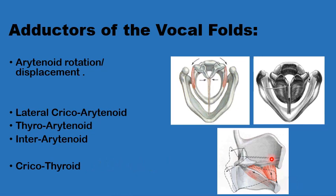When the cricothyroid contracts, it tilts the posterior plate of the cricoid cartilage and displaces the arytenoid cartilage posteriorly. This action brings about stretching of the vocal fold, lengthening of the vocal fold, and a small amount of adduction as well.